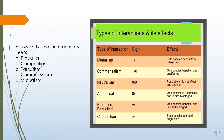In mutualism, both organisms are interdependent and both are getting benefited — nobody is getting any harm. In commensalism, one species benefits and the other is not harmed — it has no effect on the other organism. In neutralism, there is no harm and no benefit — populations do not affect one another though they are interacting.